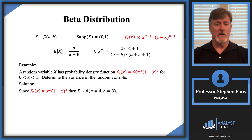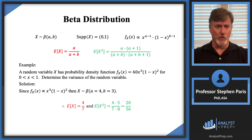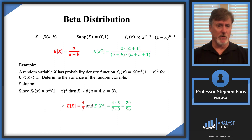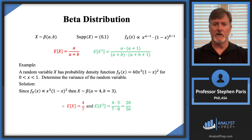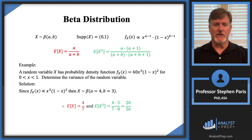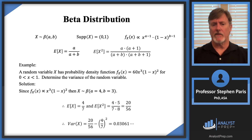Now I can answer the question about the variance. I need the first and second moments. The first moment is A/(A+B) = 4/7. The second moment is (4×5)/(7×8) = 20/56. The variance is the second moment minus the square of the first moment: 20/56 minus (4/7)², which gives approximately 0.0306. That's it — that's all I would do here.